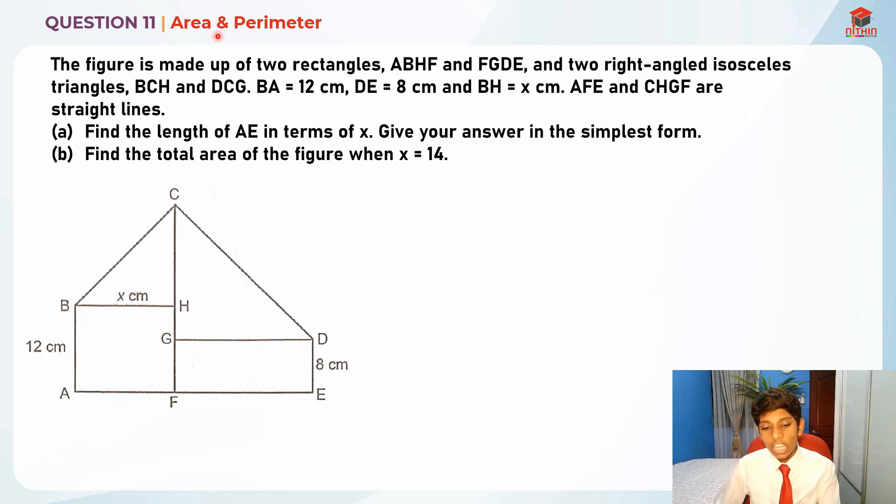This is question 11 and it is testing us on area and perimeter. There are two parts to this question, part A and part B. Let's read the question and solve for part A first. The figure is made up of two rectangles - ABHF and FGDE - and two right-angled isosceles triangles.